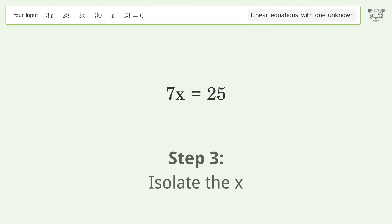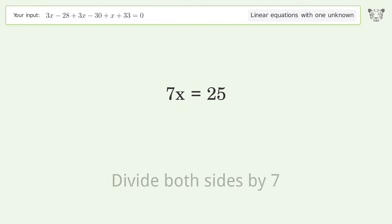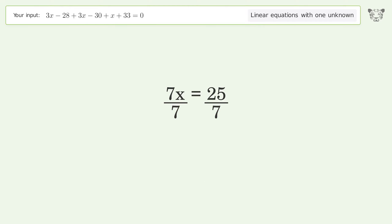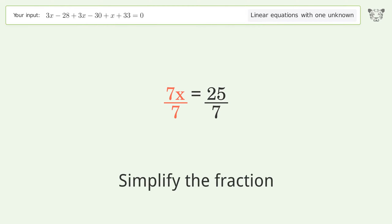Isolate the x — divide both sides by 7, then simplify the fraction.